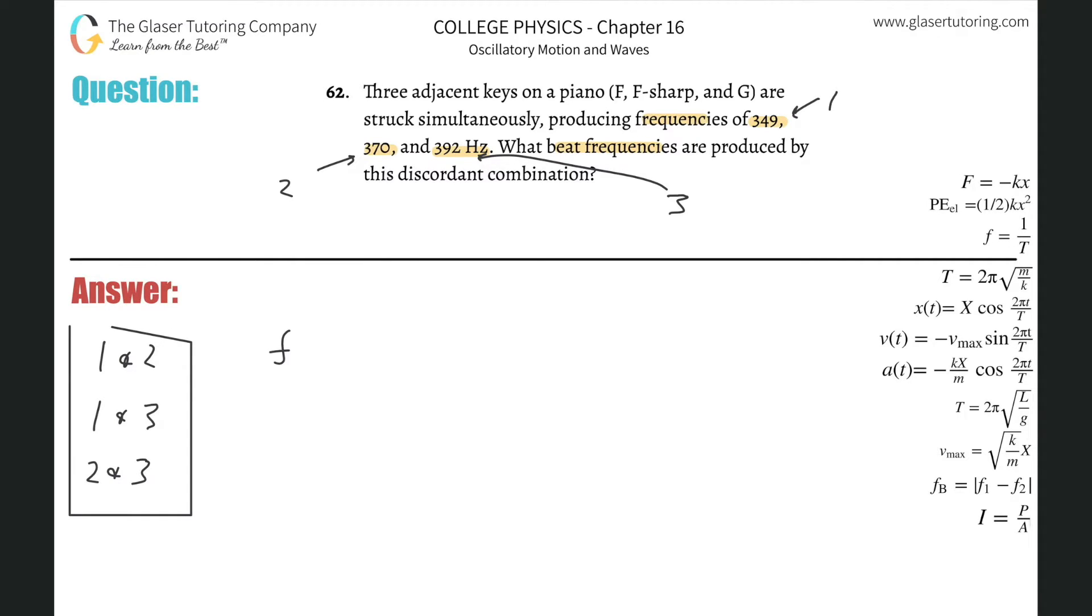To find the beat frequency between wave one and two is going to be equal to the frequency of one minus the frequency of two. It's the absolute value, so you can take the larger minus the smaller, it really doesn't matter. I'll be consistent though. I'm going to write 349 minus 370. When you take that difference, it works out to be negative, but we're going to have the positive answer. So that works out to be 21 hertz.